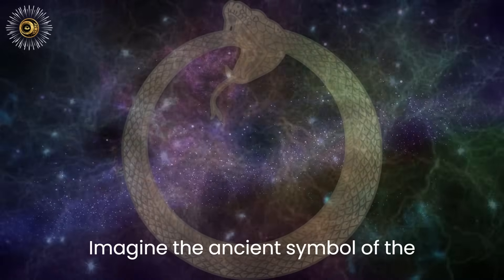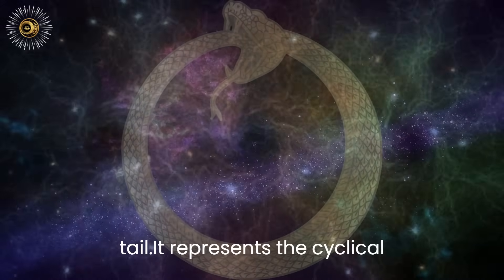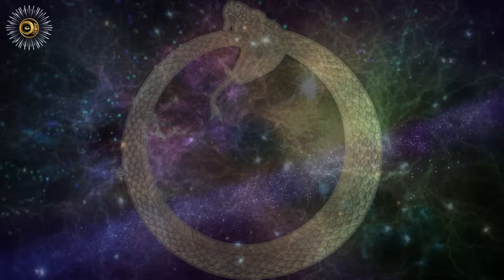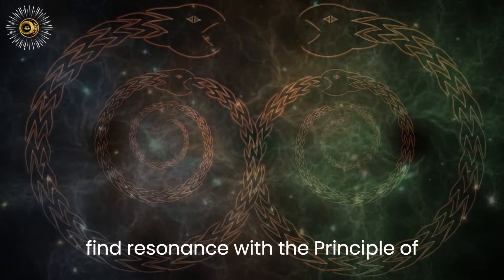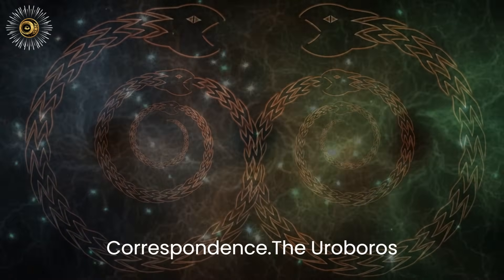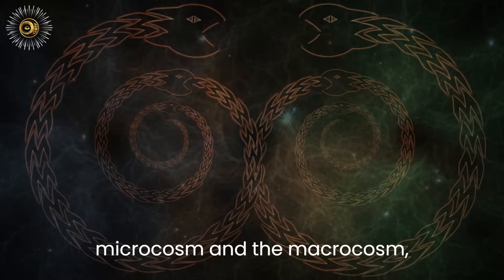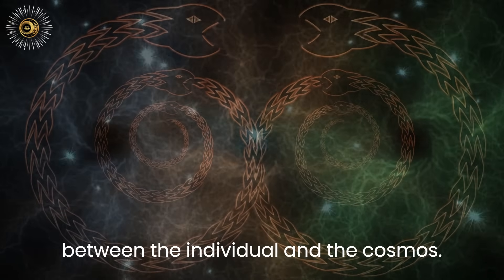Imagine the ancient symbol of the Ouroboros, the serpent devouring its own tail. It represents the cyclical nature of life, the unity of beginnings and endings. In its symbolism, we find resonance with the principle of correspondence. The Ouroboros reflects the eternal dance between the microcosm and the macrocosm, encapsulating the intricate relationship between the individual and the cosmos.